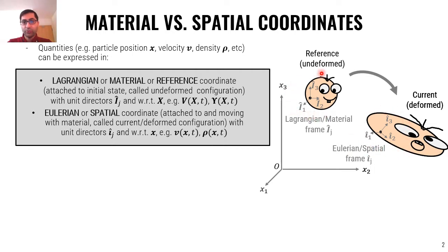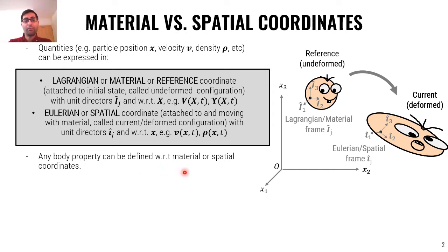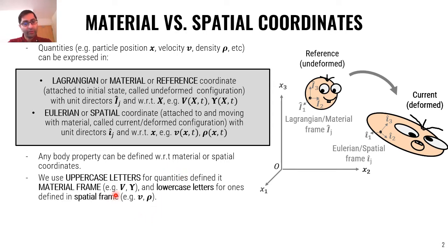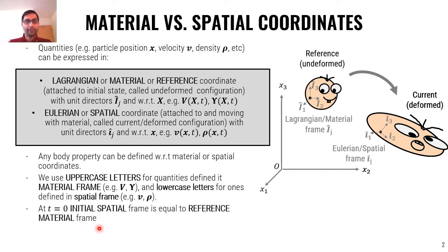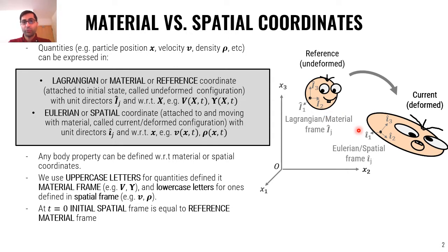You can see the difference between these two coordinate systems here. Any body property can be defined with respect to the material or spatial coordinate. We use uppercase letters for quantities defined in the material frame and lowercase letters for those defined in the spatial frame. At time zero, the initial spatial frame equals the current material frame — these two frames coincide and align. But as time proceeds and the body deforms and moves, they start deviating and moving apart.